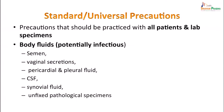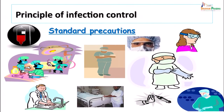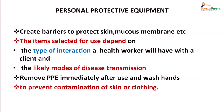Another important aspect of waste management is standard or universal precautions to be taken by all patients and labs for all specimens. The body fluids which can be potentially infectious include semen, vaginal secretions, pericardial and pleural fluids, CSF, synovial fluid, and other unfixed pathological specimens. Standard precautions include protecting yourself by mask, gowns, and goggles where splashes can occur, and preventing sharps injuries. Personal protective equipment is the main component which helps to create a barrier to protect skin and mucous membranes. The item selected for use depends on the type of interaction with the patient, the kind of procedure being done, and the kind of diseases which can be transmitted.